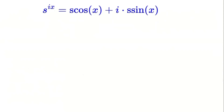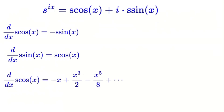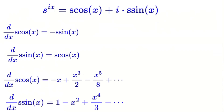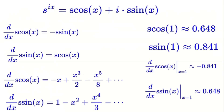Let's compute the derivatives of S cosine of X and S sine of X using two methods: summation notation and term-by-term differentiation. Using summation notation, the derivative of S cosine of X is negative S sine of X, and the derivative of S sine of X is S cosine of X. Term-by-term differentiation gives: for S cosine of X, we get negative X plus X cubed over 2 minus X to the 5th over 8, and so on; for S sine of X, we get 1 minus X squared plus X to the 4th over 3, and so on. At first glance these results might seem inconsistent, but if we compute the numerical values, they match. At X equals 1, S cosine of 1 is about 0.648 and S sine of 1 is about 0.841. The derivative of S cosine of X at X equals 1 is about negative 0.841, and the derivative of S sine of X at X equals 1 is about 0.648. This confirms that both methods give the same results numerically.